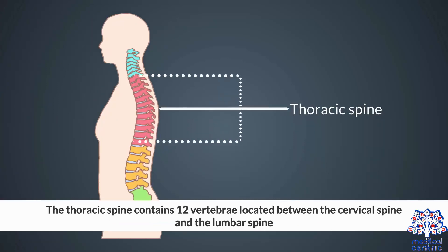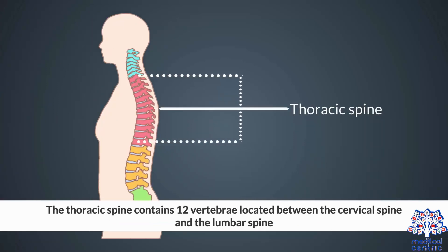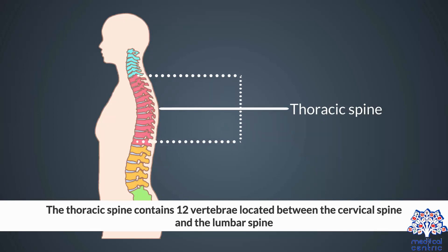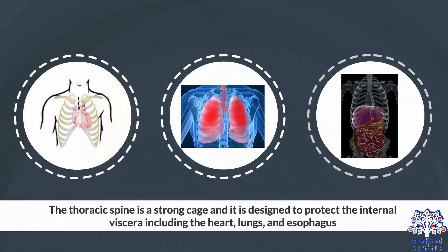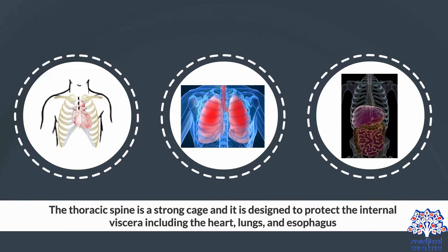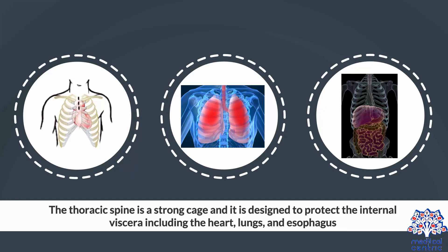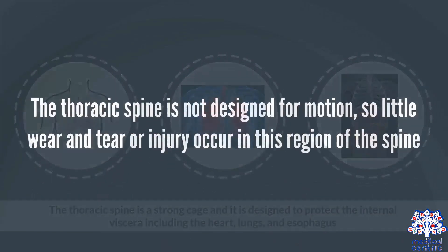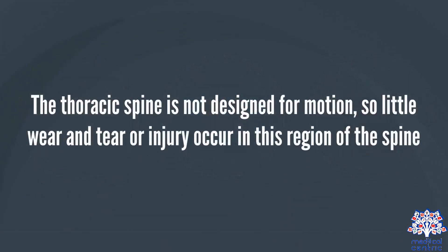The thoracic spine contains 12 vertebrae, located between the cervical spine and the lumbar spine. The thoracic spine is a strong cage, and it is designed to protect the internal viscera, including the heart, lungs, and esophagus. The thoracic spine is not designed for motion, so little wear and tear or injury occur in this region of the spine.